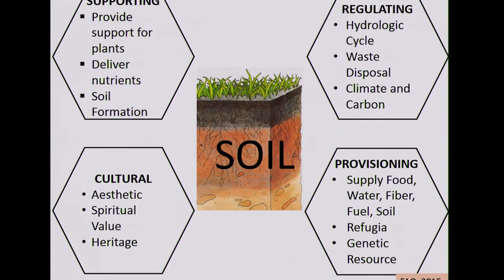Good morning, everybody. Thank you very much, Gregory, for the introduction. I'm going to talk about ecosystem services of agroforestry. For soils, regulating services include hydrological cycle, waste disposal, climate, and carbon. Supporting services provide support for plants, nutrients, and soil formation. Provisioning includes supply of food, water, fiber, fuel, and soil.